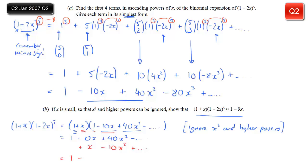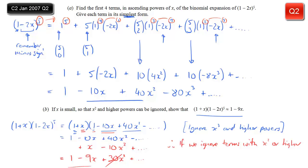Gathering terms: 1, then minus 10x plus x gives minus 9x, then 40x² minus 10x² is 30x². But we're going to ignore that 30x² because we're told x² and higher powers can be ignored. So we're left with 1 minus 9x. We can conclude that (1 + x)(1 − 2x)^5 is approximately equal to 1 minus 9x, as long as we can ignore x² and higher powers.